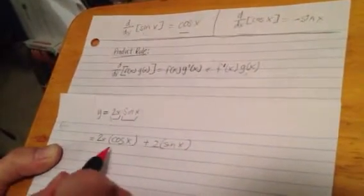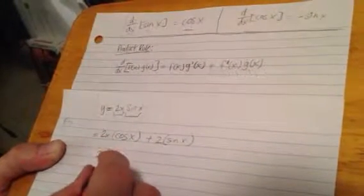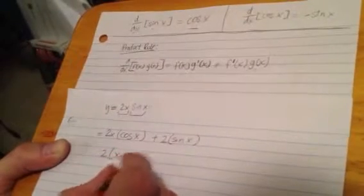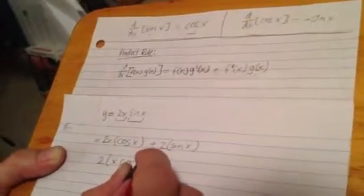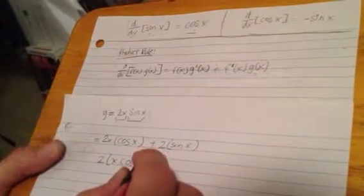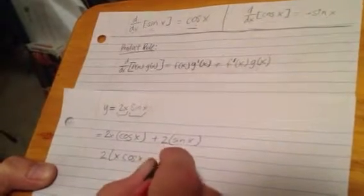And from here, what I can do is actually just take both of these two out, factor them out, and be left with x cosine of x—I can call that y prime—plus sine of x.